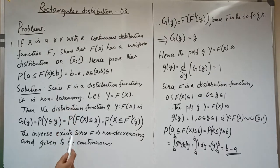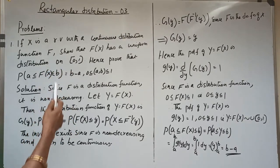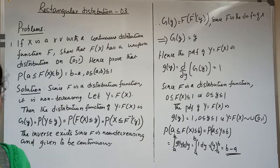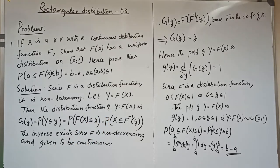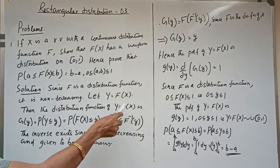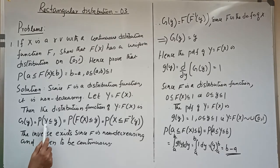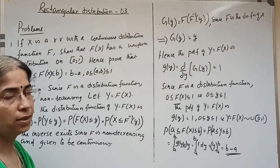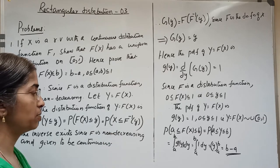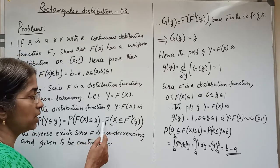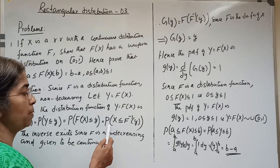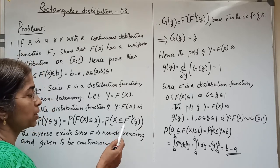Since f is a distribution function, it is non-decreasing, which is the property of a distribution function. We assume capital Y = capital F(X). The distribution function of Y = F(X) is obtained as capital G(y), which is P(Y ≤ y), that is P(F(X) ≤ y), equal to P(X ≤ F⁻¹(y)).